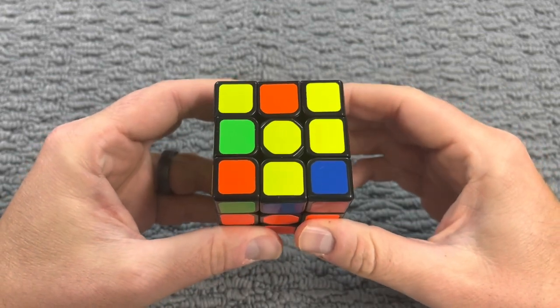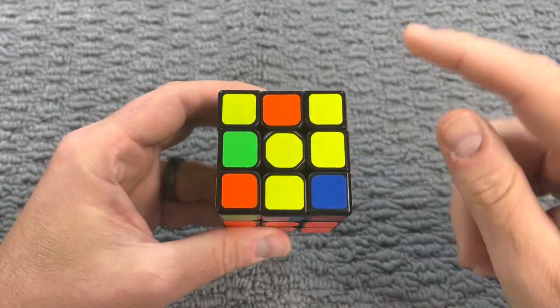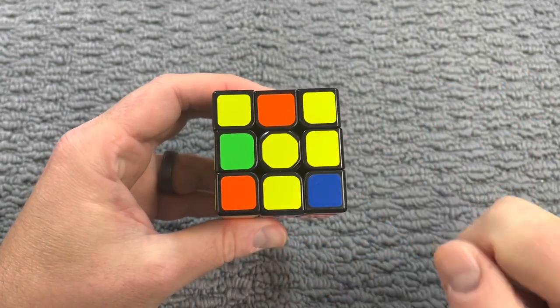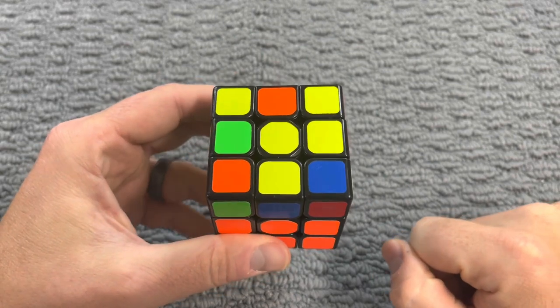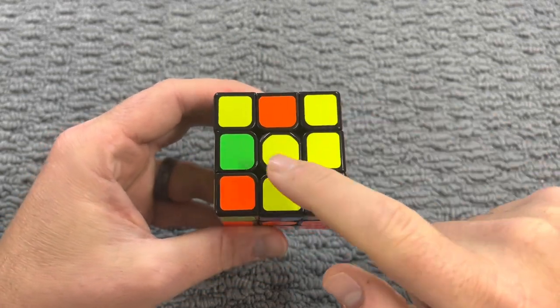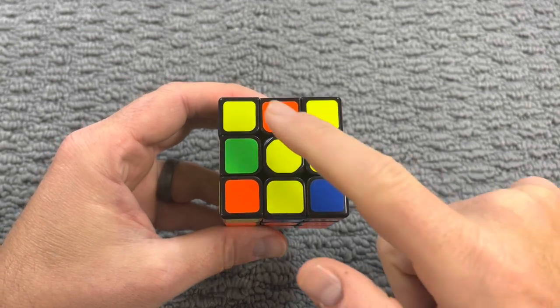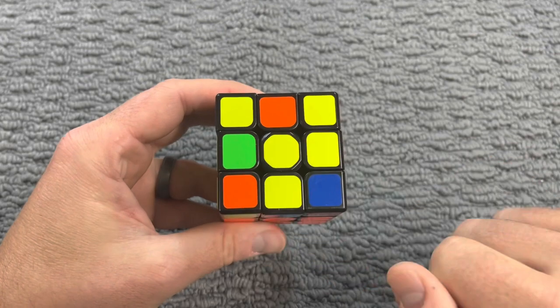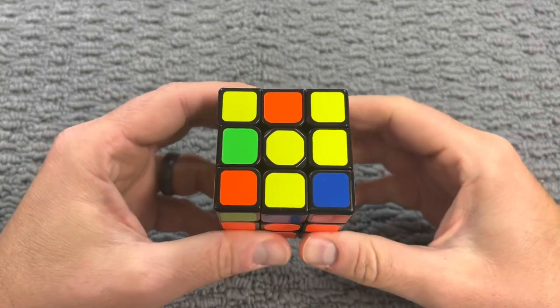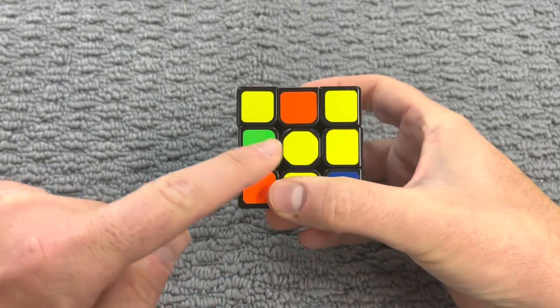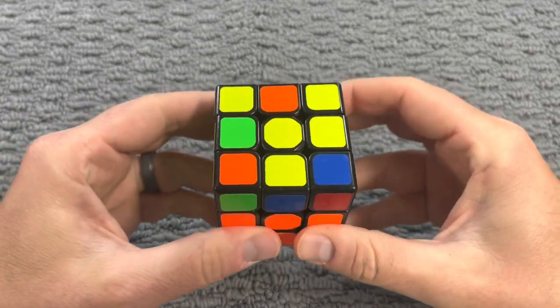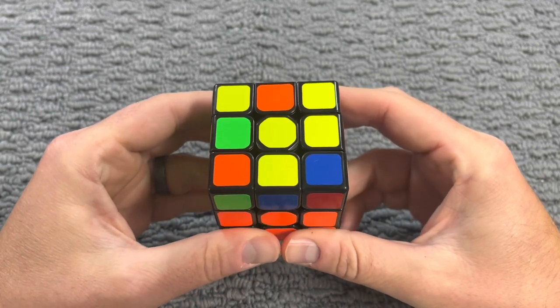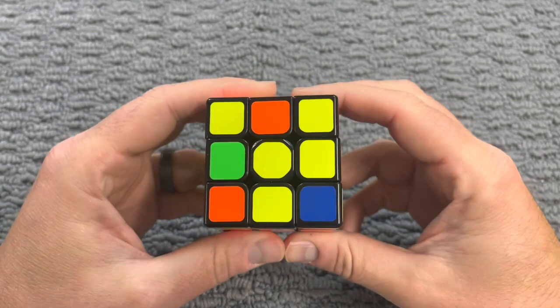The second pattern you might see is a yellow line going straight across the center here. If you do, that's great news because that is the step right before solving the yellow cross. If you see just a yellow line across here, hold the cube like this and you'll be able to do this same story, but you'll access the yellow cross quicker.